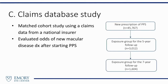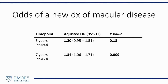We wanted to broaden our search a little further, so we did a claims database study looking at a large U.S. national insurer. We searched for patients who had a new prescription of this drug and wanted to see what were the odds of them having a new diagnosis of a macular disease five or seven years later. There's no diagnosis code for pentosan polysulfate maculopathy, so we used an aggregate diagnosis code looking at AMD, drusen, and other maculopathies. At the five-year time point we found a trend for increased odds of having a new macular disease, and at the seven-year time point it was statistically significant.